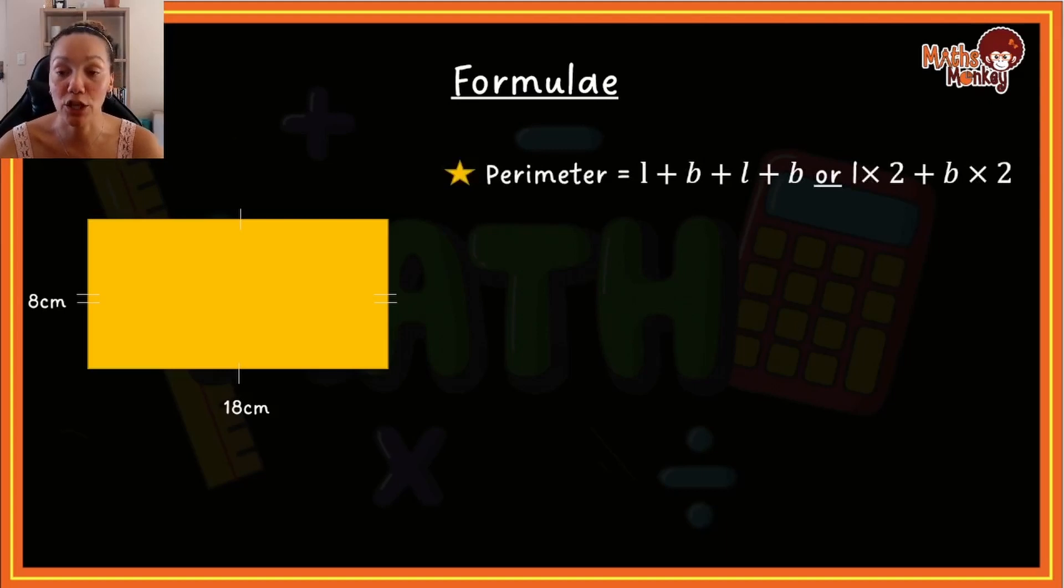If I look at perimeter of a rectangle now, then the perimeter would mean I'm just going to add the outside sides together. So I'm going to say length, which is always the longer side, plus breadth, plus length, plus breadth. Or you can say length times 2 plus breadth times 2. Both of these formulas will give you the same answer.